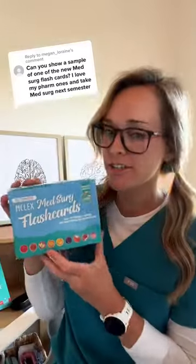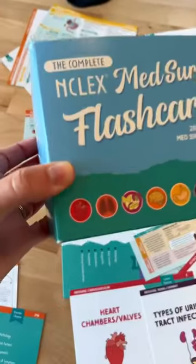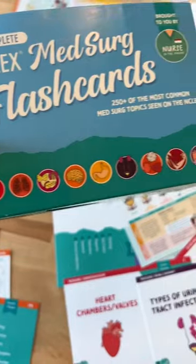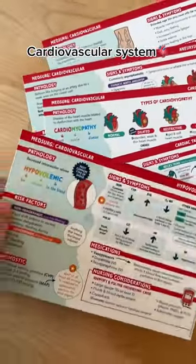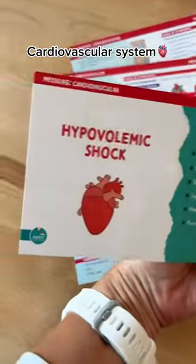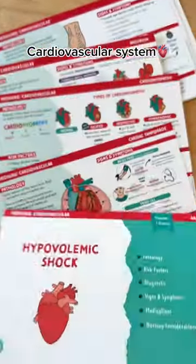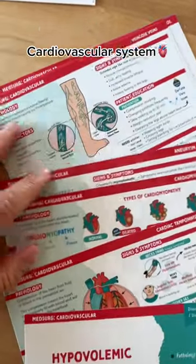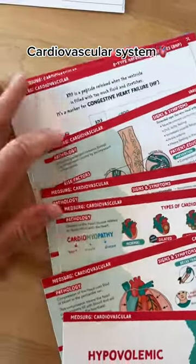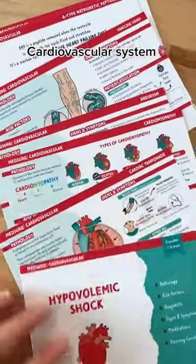I'm going to show you what's included in the complete NCLEX MedSurg flashcards. The MedSurg flashcards are broken down by sections. The first section is the cardiovascular system. This is probably the biggest section, just because there are so many different diseases, diagnostics, and interventions for this.